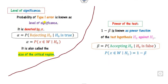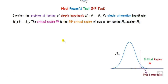The level of significance is the probability of the Type I error, called alpha, and the power of the test is 1 minus beta — remember this definition. Now, what is the most powerful test? If you have a simple hypothesis (with equality) against a simple alternative, then the critical region W is said to be the most powerful critical region.